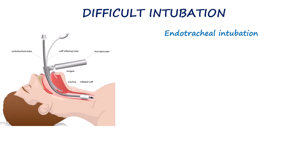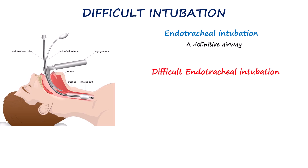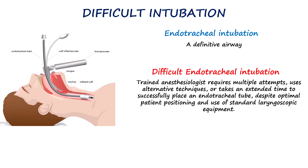Finally, we move to intubation, which is the definitive method for securing and protecting the airway. When intubation cannot be achieved, alternative techniques must be used to maintain oxygenation and ventilation, marking the beginning of difficult airway management. Difficult intubation is defined as a situation where a trained anesthesiologist requires multiple attempts, alternative techniques, or prolonged time to successfully place an endotracheal tube, despite optimal positioning and standard equipment. It is specifically considered difficult when more than 3 attempts or more than 10 minutes are required with conventional direct laryngoscopy. This definition guides clinicians to limit attempts and switch early to a backup strategy such as mask ventilation or supraglottic device insertion.